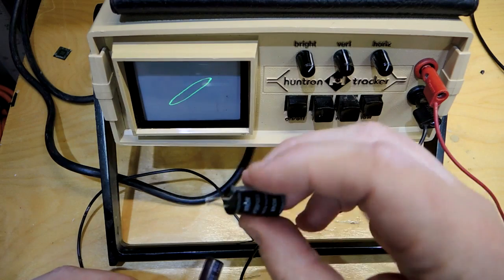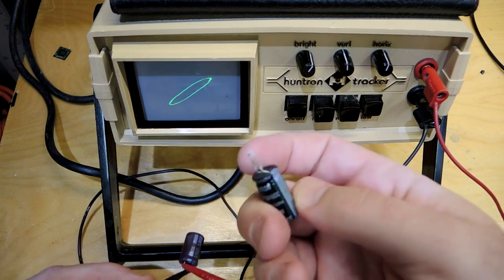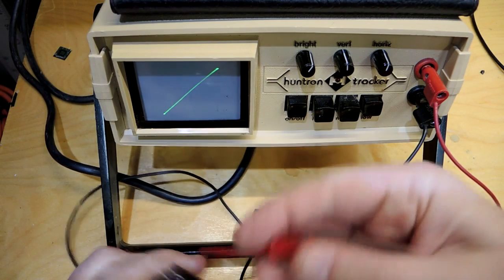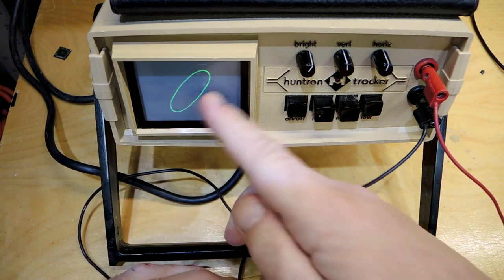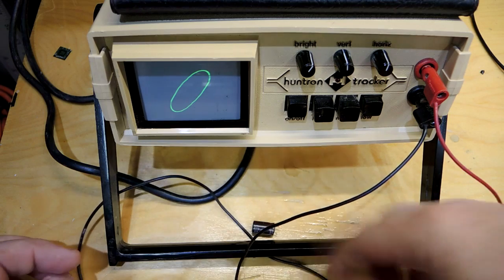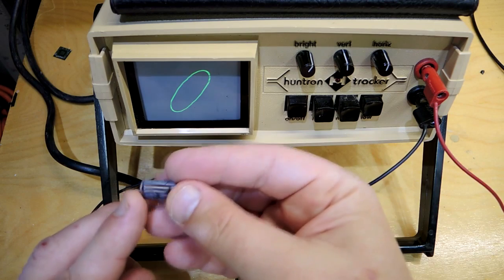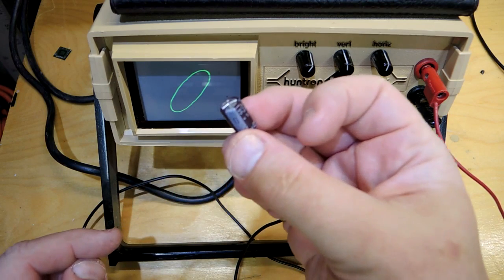Take another capacitor here with similar capacitance to what this one's now exhibiting and we can see the circle will be more open, more of a circle. So this capacitor probably has not only incorrect capacitance but also higher internal resistance.